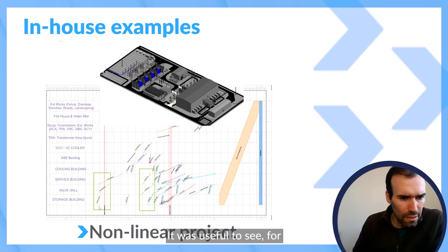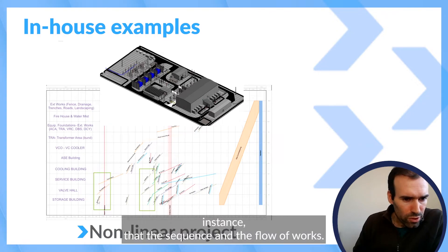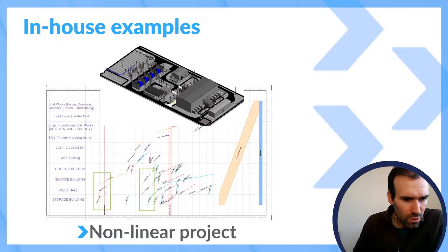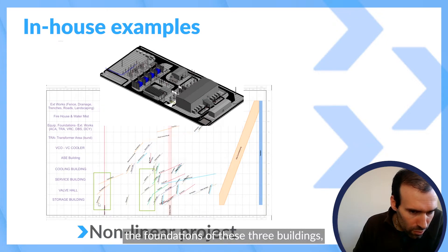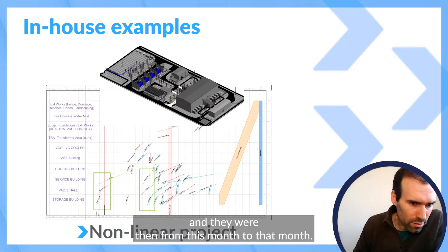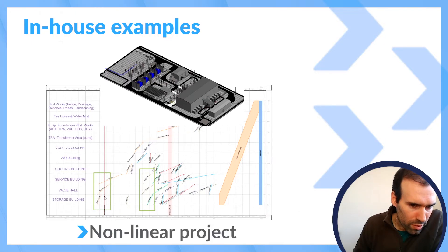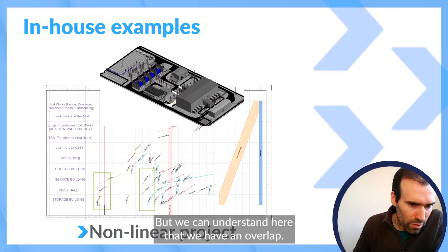It was useful to see, for instance, that the sequence and the flow of works. So for instance here, the foundations of these three buildings, they were done from this month to that month. But we can understand here that we have an overlap, we have overlap of these activities.